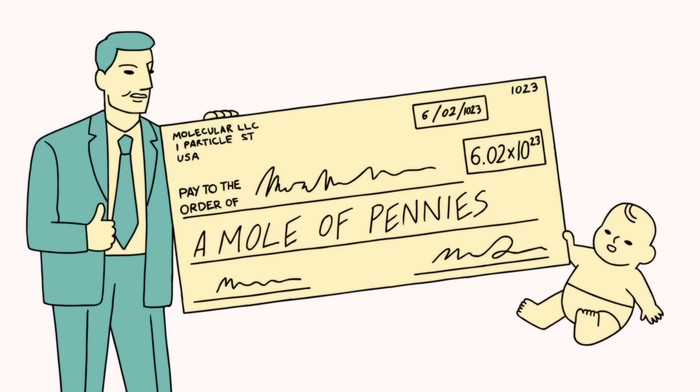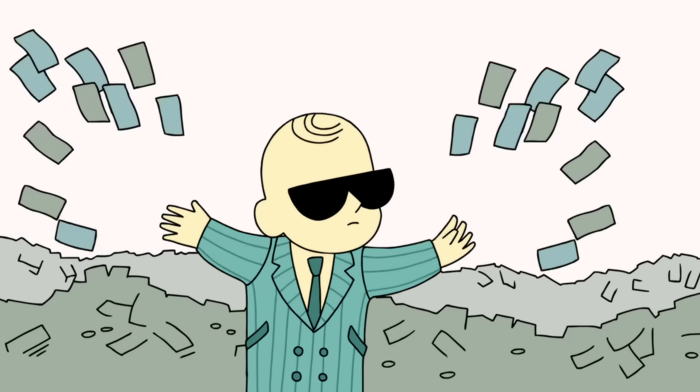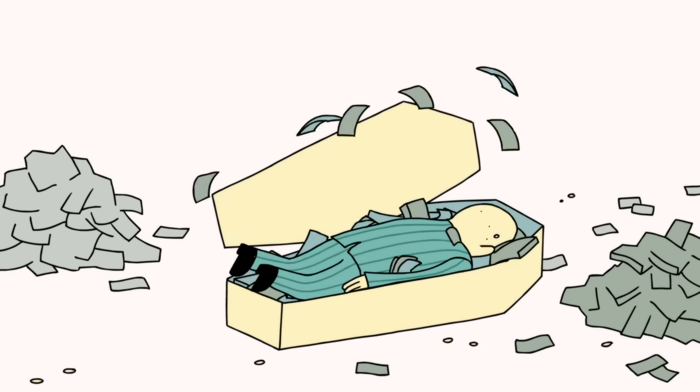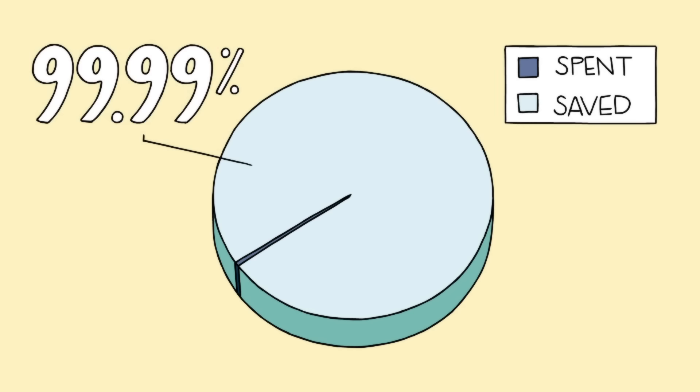If you received a mole of pennies on the day you were born and spent a million dollars a second until the day you died at the age of 100, you would still have more than 99.99% of your money in the bank.